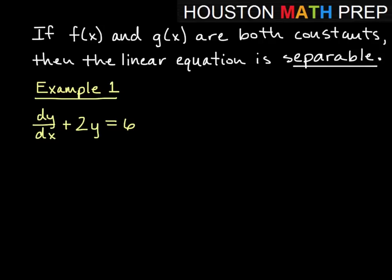One thing to point out: sometimes a linear equation also fits a different category. Since we've only done separable equations so far, if f and g are both just constants, then the linear equation is definitely going to be separable as well. For example, if f equals 2 and g equals 6, both constants, this is certainly separable.